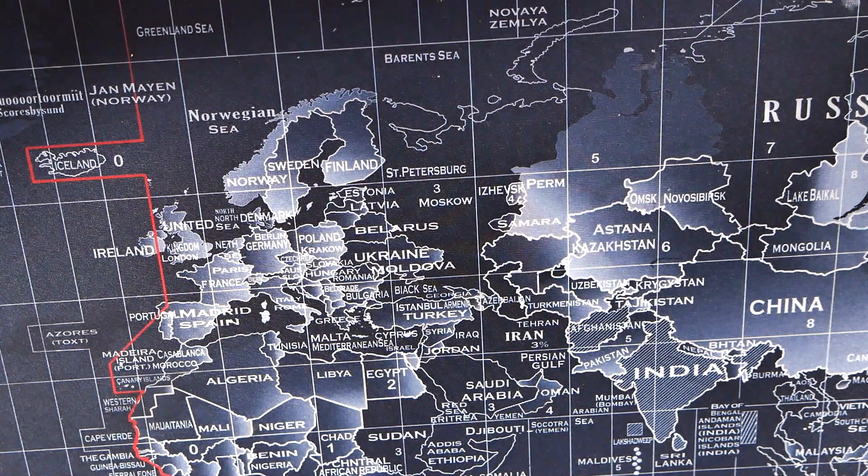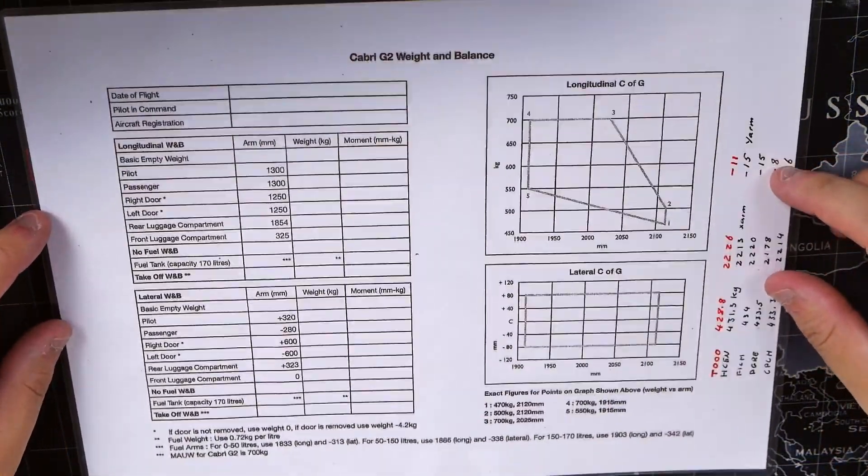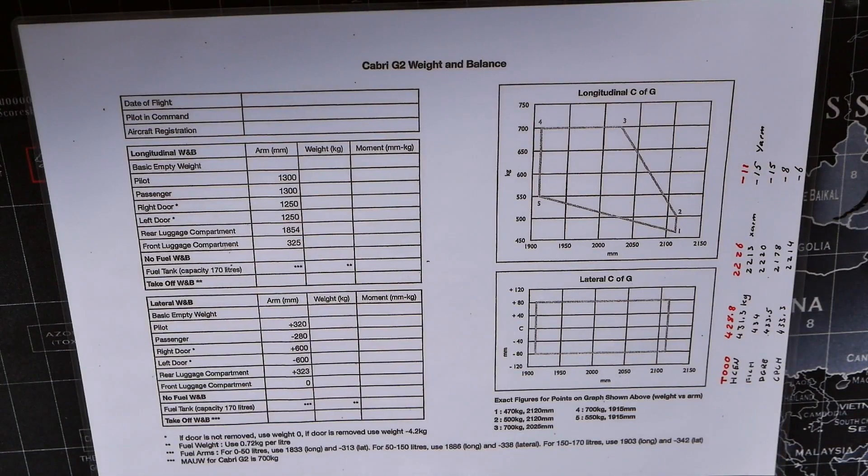When calculating our aircraft's mass and balance, we get out our sheet that allows us to do so. A helpful thing I've done is laminated one of the mass and balance forms so I can use marker pens on the sheet and then simply wipe them off after I've done my calculations. This way I'm not just wasting paper every single flight.